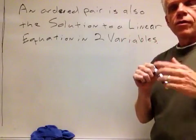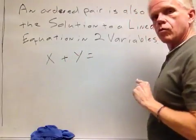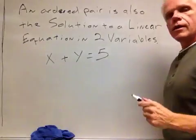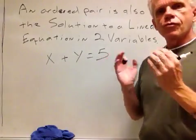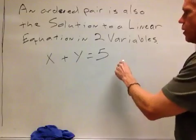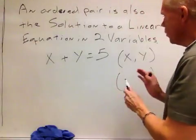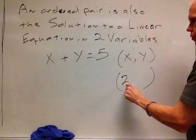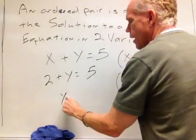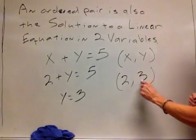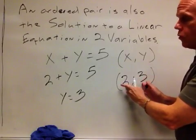The classic example of a linear equation would be something like X plus Y equals five. X and Y, as an ordered pair, would be the ordered pair that makes this a true statement. For example, if we let X equal two in this equation, we have two plus Y equals five, and of course Y would equal three. So two comma three is an ordered pair.